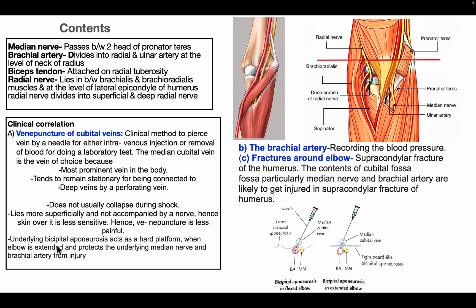Deep to the median cubital vein, the bicipital aponeurosis acts as a hard platform when the elbow is extended and protects the underlying median nerve and the brachial artery from injuries. You can see here in the diagram the bicipital aponeurosis in the flexed elbow, where it works as a tight broad band-like structure preventing damage to the brachial artery and the median nerve.